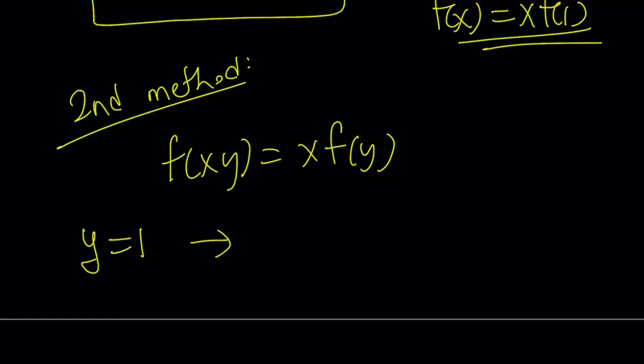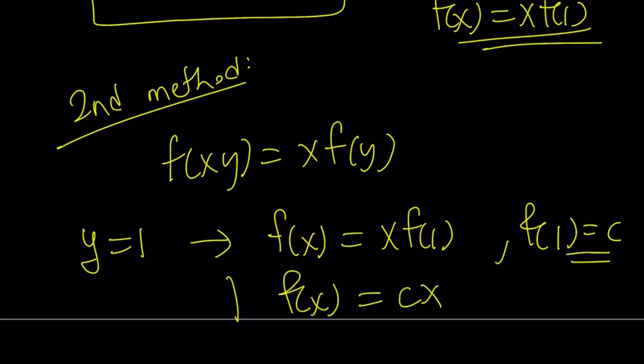Replace y with 1 and see what happens. This is really cool. If you replace y with 1 in the original equation, you get f of x equals x times f of 1. And if you set f of 1 equals c, you get f of x equals cx. And that brings us to the end of this video.